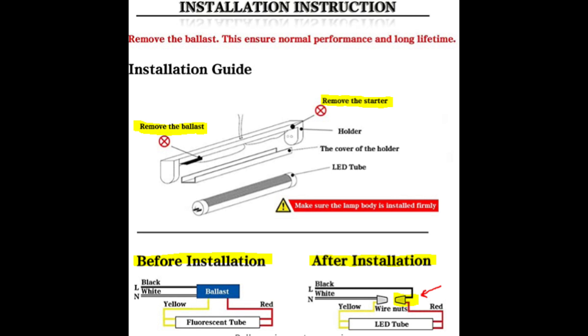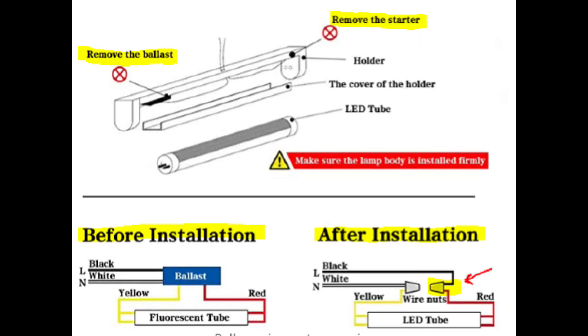Now in a Stern pinball machine to do a CCFL conversion to LED, only thing you have to do is cut the black wire and the red wire on the ballast, and wire nut those two wires together into one connection.